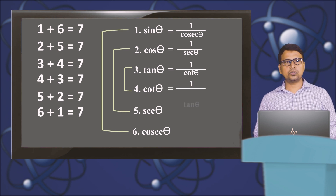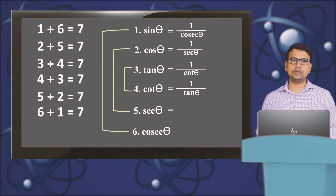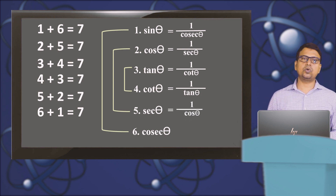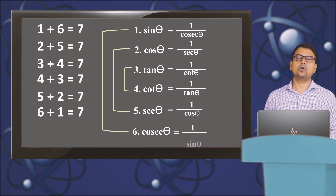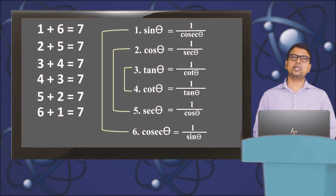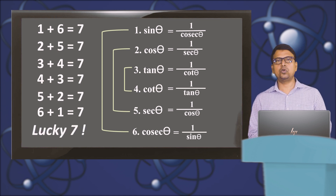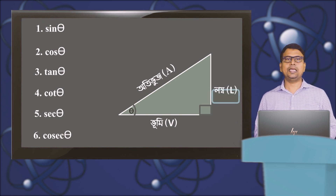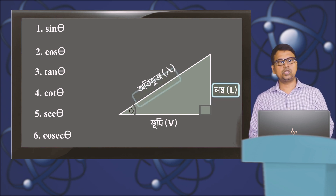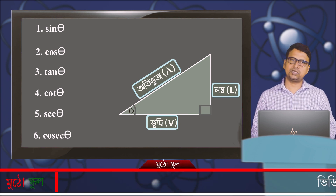This is 4 number: 4 theta is equal to 1 by 10 theta, and 4 theta is equal to 1 by 3 theta. 1 theta is equal to 1 by cos theta, and 2 theta is equal to 1 by sin theta. Let's look at the number of sin theta.